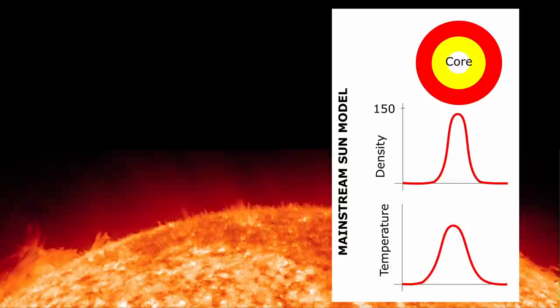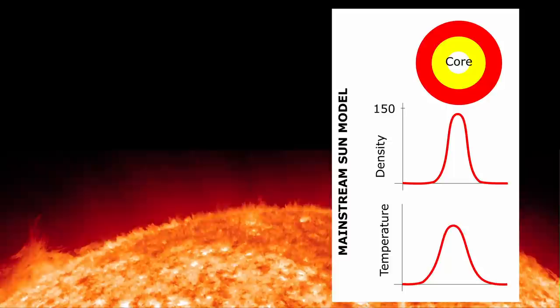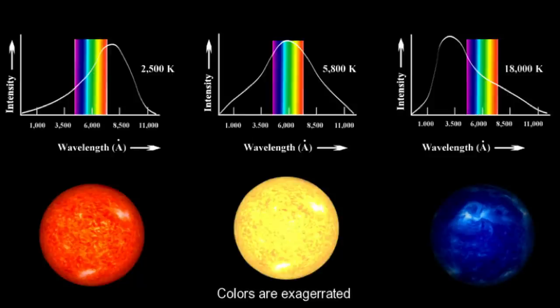One piece of evidence he gives for the surface being liquid relates to the temperature of the photosphere, which appears to be cool compared to the interior. In a blackbody radiator, the temperature we detect from the emissions given off directly relates to the surface temperature. The hotter an object is, the higher energy photons it will emit.